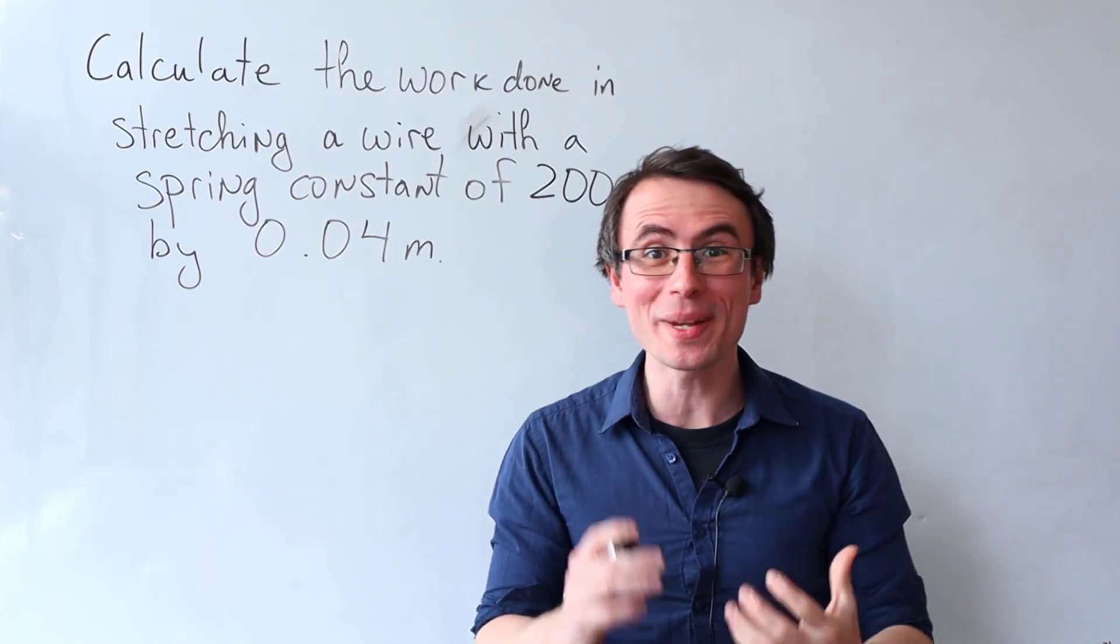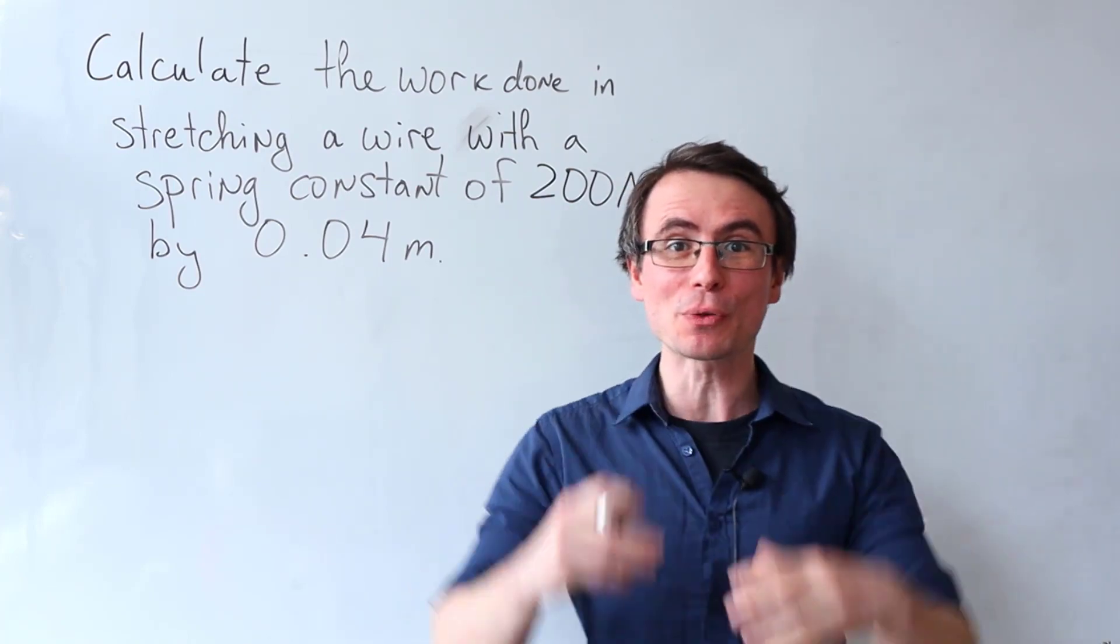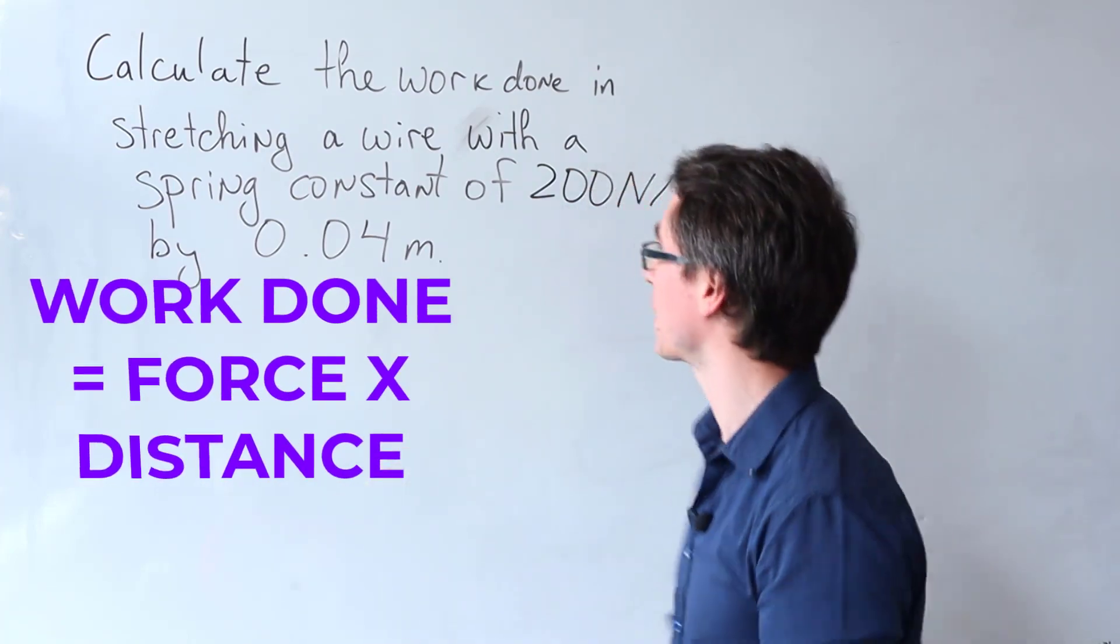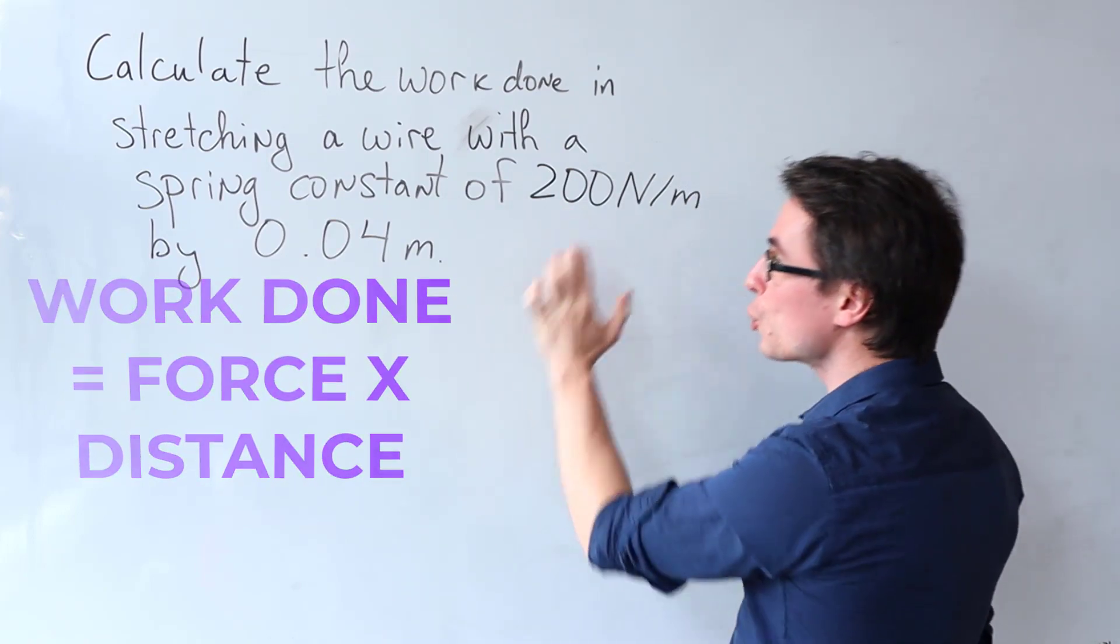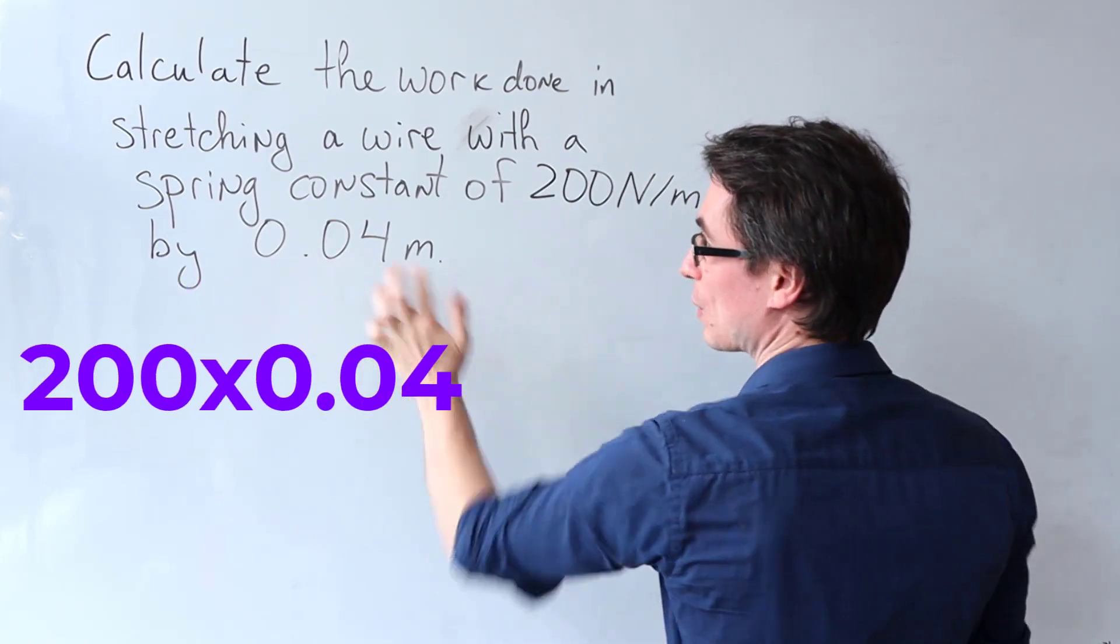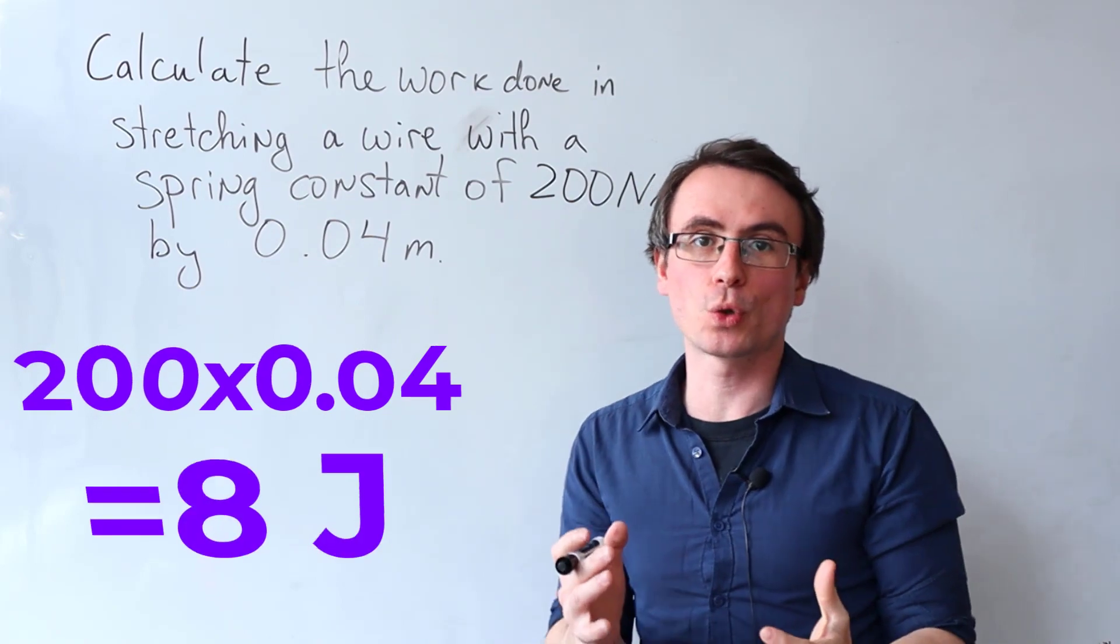The incorrect formula that most students used was that work done is equal to force times distance, and they wrote 200 times 0.04, or 8 joules.